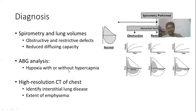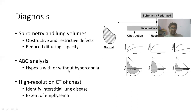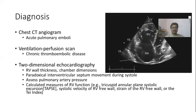ABG will show hypoxia with or without the presence of hypercapnia. For example, in COPD there can be hypercapnia, and in chronic thromboembolism there can be hypoxia on ABG. If diagnosis remains uncertain, high-resolution CT of the chest can be ordered, as it helps identify other causes like interstitial lung disease and also helps quantify the extent of emphysema. Chest CT angiography is useful in cases of acute pulmonary embolism, and ventilation-perfusion scan is used in chronic thromboembolic disease.